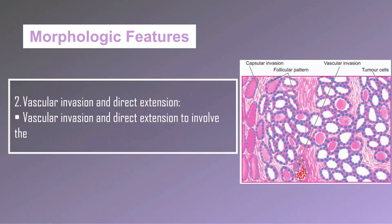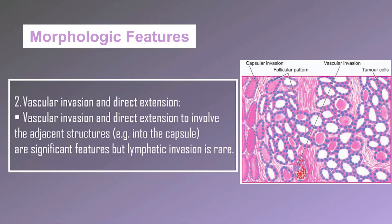Vascular invasion and direct extension to involve adjacent structures — for example, into the capsule — are significant features of follicular carcinoma, but lymphatic invasion is rare.